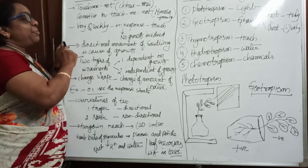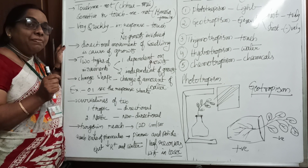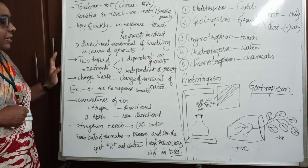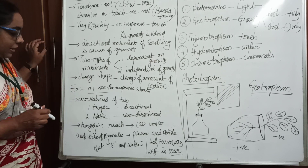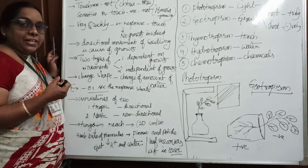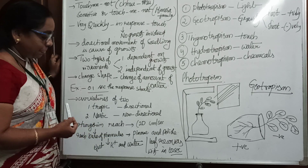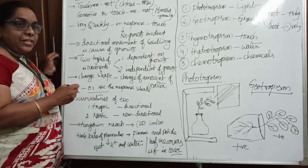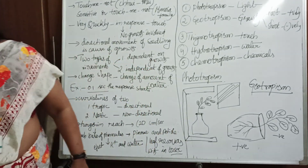Whenever the touch-me-not plant receives a touch, the first thing that happens is the turgor chemical is released. Turgor is the chemical present in the water. When this turgor protein comes out, it reaches the pinnules. From the pinnules it goes to the petiole.